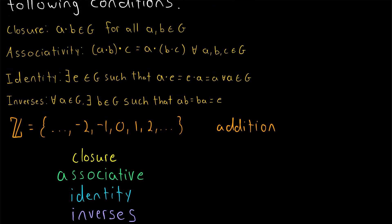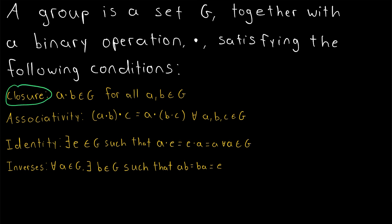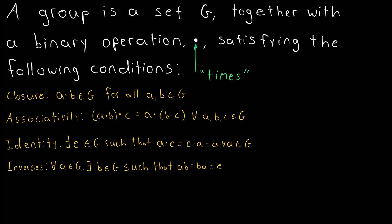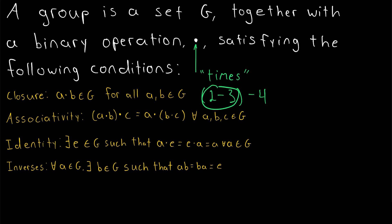Let's quickly look back at the abstract statements of the group axioms. Beginning with the axiom of closure: for any elements A and B in our set, A times B should also be in our set. Then we have associativity, which tells us for any three elements A, B, and C, it should not matter how we bracket them: A times B times C should equal A times (B times C). An easy example of an operation that is not associative is subtraction: two minus three minus four equals negative five, which is not equal to two minus (three minus four), which equals three.